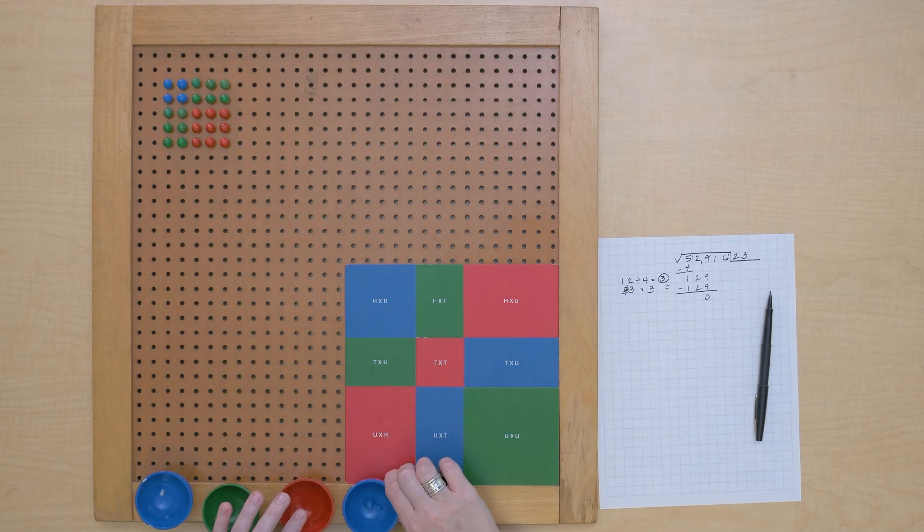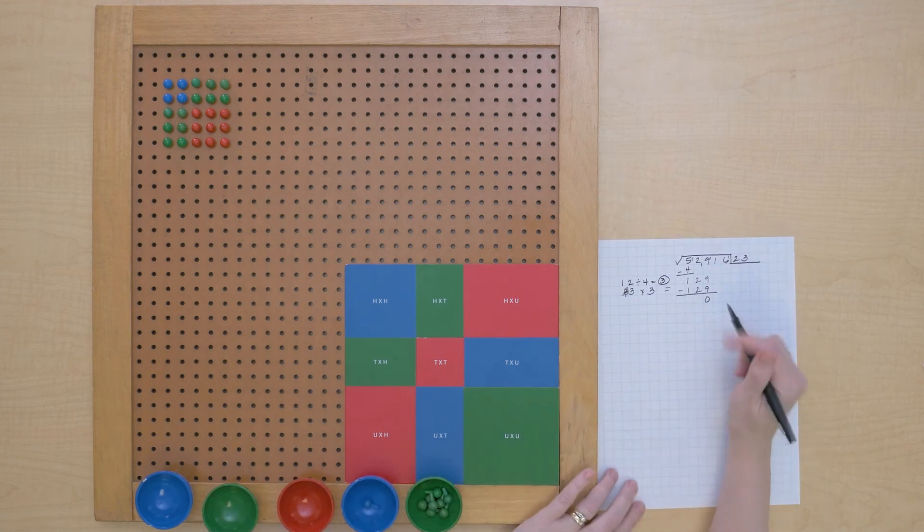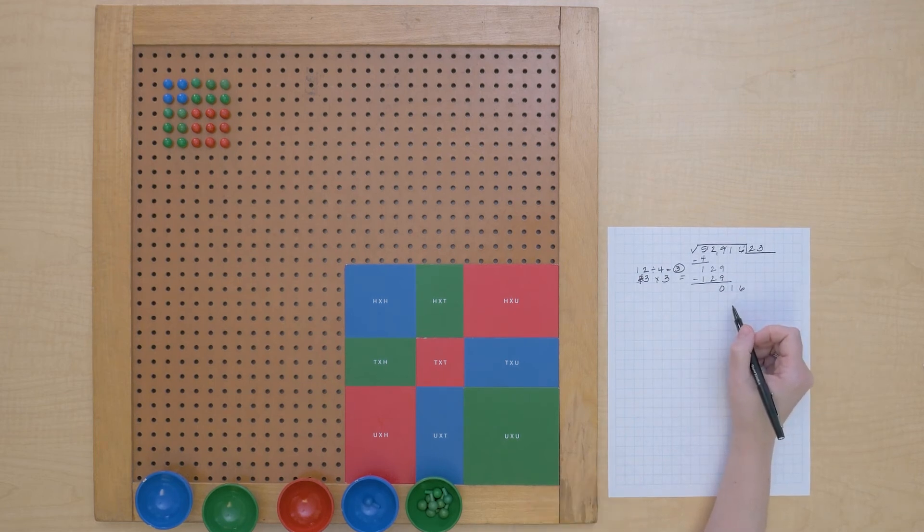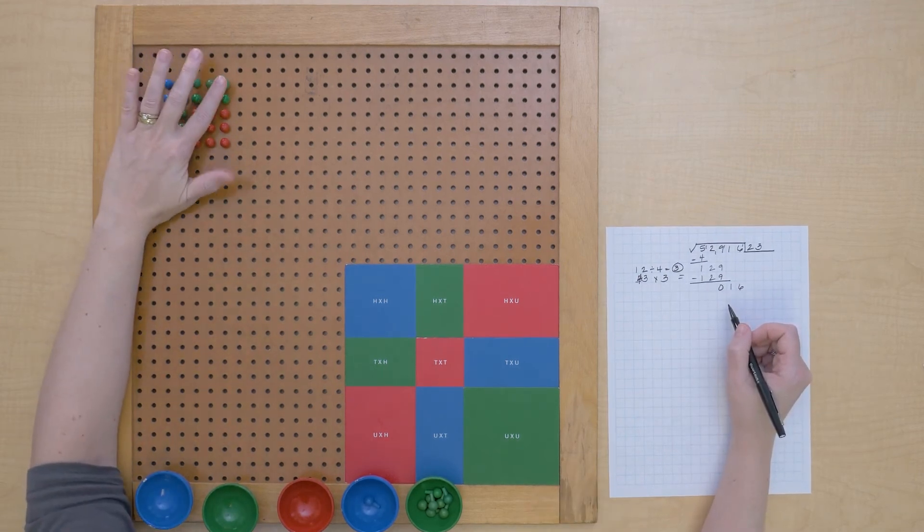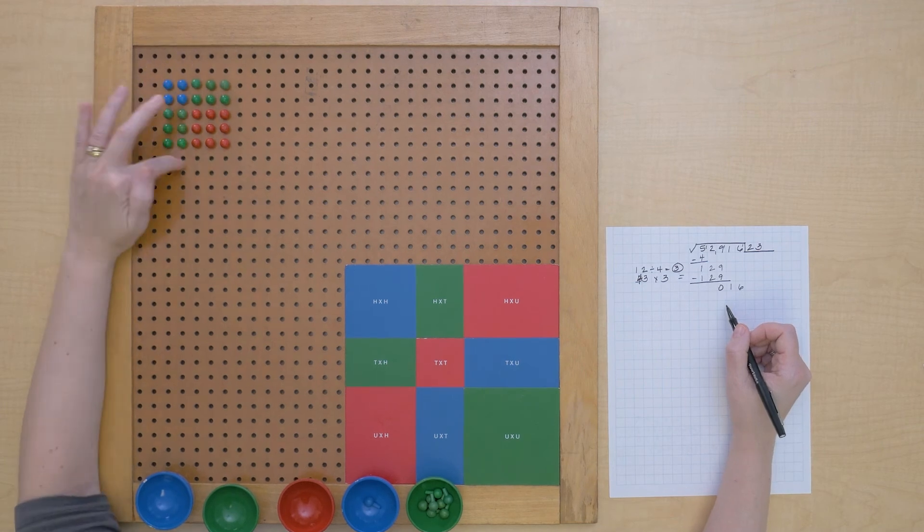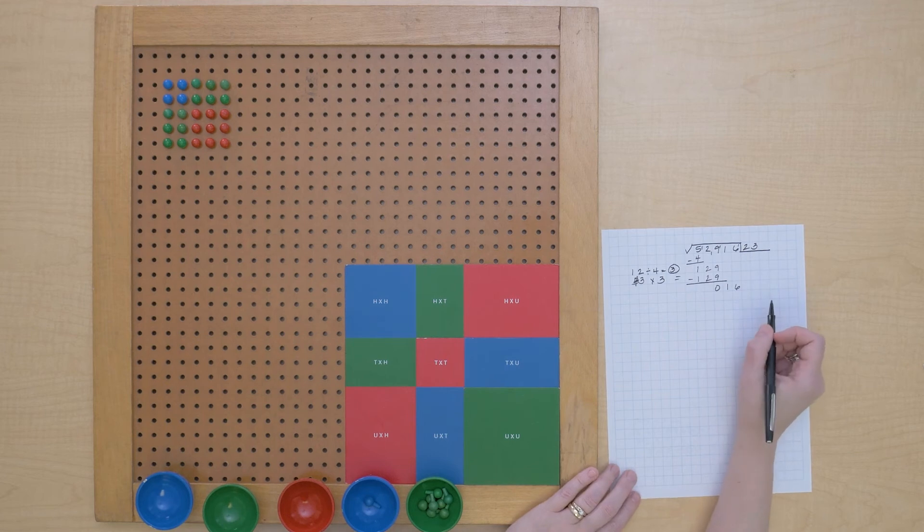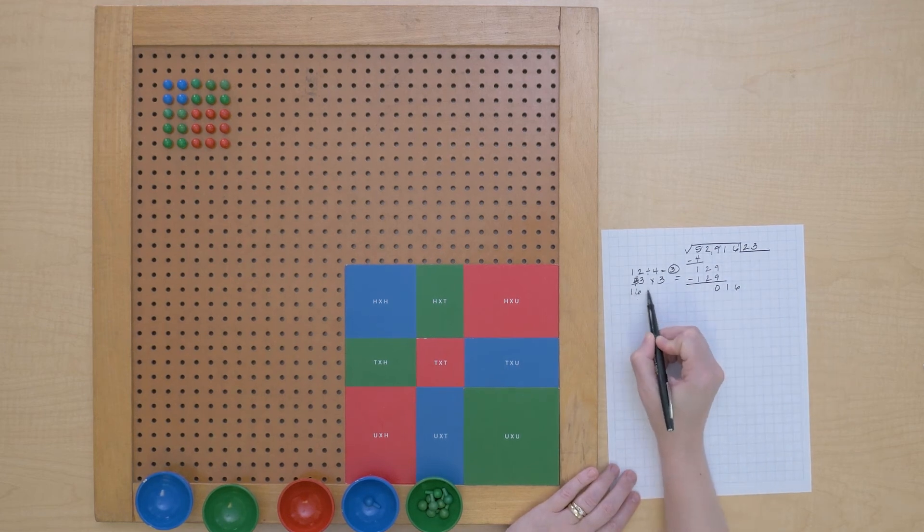Let's bring down our next period and we'll bring it down here on paper and see if we can anticipate what our next digit is going to be in our root. So we're going to have 23 on this side, 23 on this side, so 46 is what we need to lay out each time and we have 16 to use.